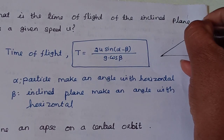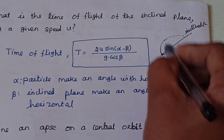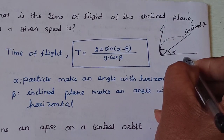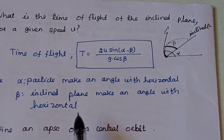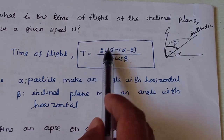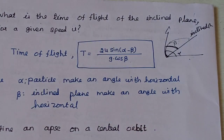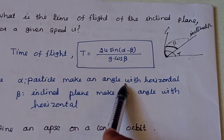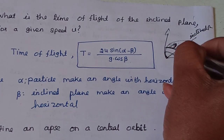The slope is the inclined plane at angle β with the horizontal. The projectile is launched at angle α with the horizontal. The time of flight T equals 2u·sin(α − β) divided by g·cos β, where u is the initial speed, α is the angle the particle makes with the horizontal, β is the angle the inclined plane makes with the horizontal, and g is the gravitational constant.